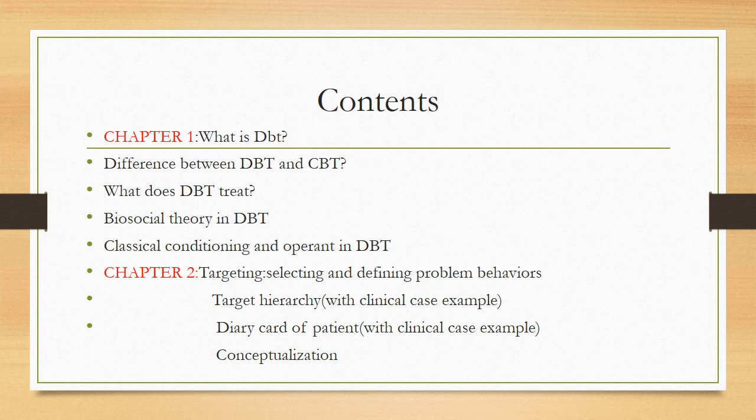In Chapter 2, we will be discussing how to select and define problem behaviors. We will be making a target hierarchy along with the patient. The first main goal focuses on life-threatening behaviors — such as suicidal behaviors, suicidal attempts, homicidal behaviors, overdosing, cutting of arms, vomiting to cause bleeding, and burning of arms.